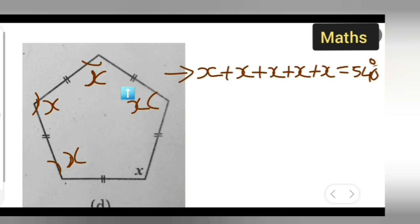Okay, now what we need to do is we need to add all this x. So how many x are there? 5x, right? One, two, three, four, five. So write down 5x is equal to 540.